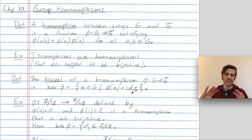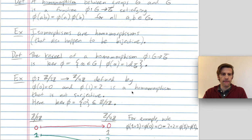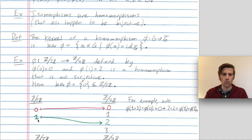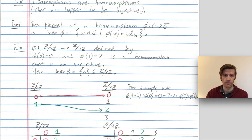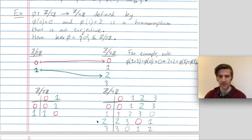Let's get away from the theory and do some examples. Consider the map phi from Z mod 2Z to Z mod 4Z, defined by phi of 0 is 0 and phi of 1 is 2. This is a homomorphism. It's not surjective — not every element of Z mod 4Z gets hit — so it's not an isomorphism, since Z mod 2Z and Z mod 4Z have different sizes. The kernel is just 0, the only thing that gets mapped to the identity 0 of Z mod 4Z.